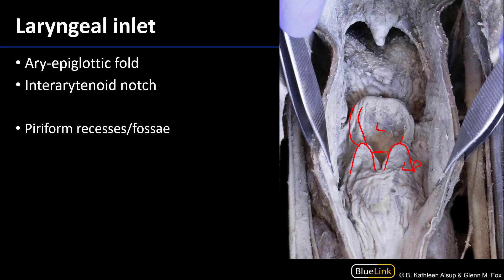Those aryepiglottic folds are the folds in which the cuneiform cartilages may be found. They also help to decide the shape and the patency of the laryngeal inlet. Within them are aryepiglottic ligaments that are part of the quadrangular membranes.